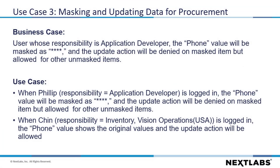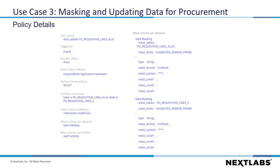Next, we will move to the third use case, where we will cover how to mask and update procurement data based on policy. For this third use case, if the user's responsibility is Application Developer, the phone value will be masked as asterisk, and the update action will be denied on masked items, but allowed for other items. The users Philip and Chin will be used in this use case. Before we move into the demo, let's review the policy details and expected results. Here are the policy details.